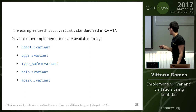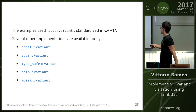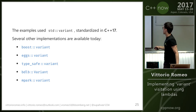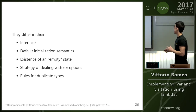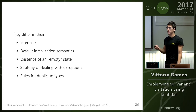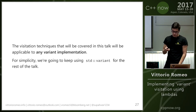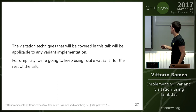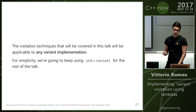All the examples so far use std::variant, which was standardized in C++17. But there are many other implementations available: probably the most commonly known is in Boost and is C++03 friendly. Then you have X variant, TypeSafe variant by Yonatan (here at the conference), BDLB variant which is the open source Bloomberg implementation, and MPARC variant by Michael Park (also here at the conference). These variant types have slight differences in interface, default initialization, empty state, exception handling strategies, and rules for duplicate types. The good news is that all the techniques we're going to implement are applicable to any variant implementation.